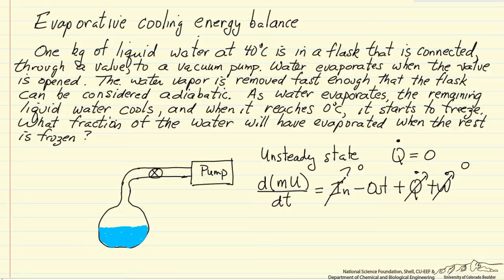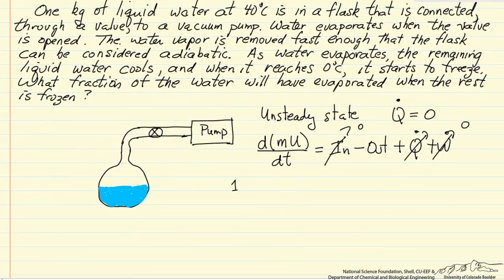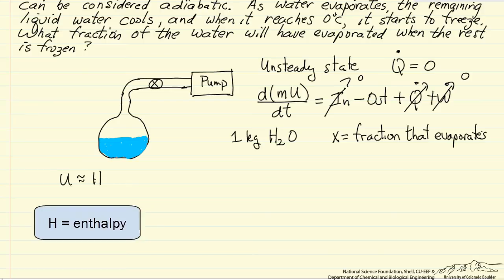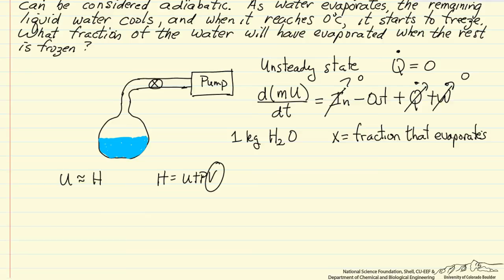We are going to start with the basis of one kilogram of water and use the term x to represent the fraction that evaporates when the remaining material has frozen. So this first law, I can rewrite it because we are dealing with a liquid, u is approximately equal to h. This is because h is u plus pv, this term which is the volume per kilogram is a small number. Good substitution because it is a liquid.